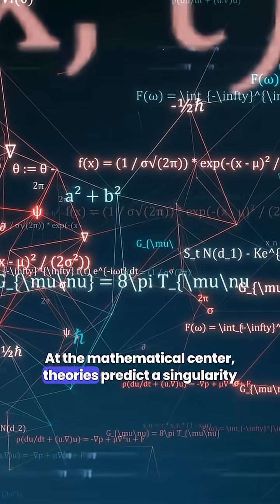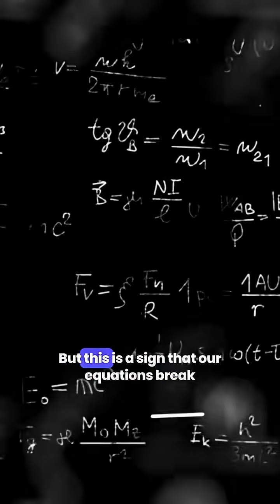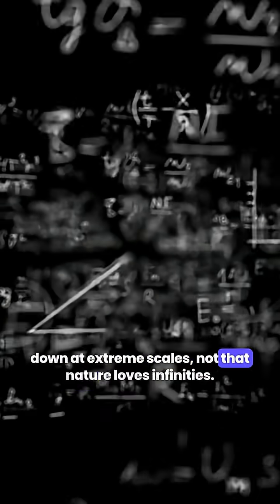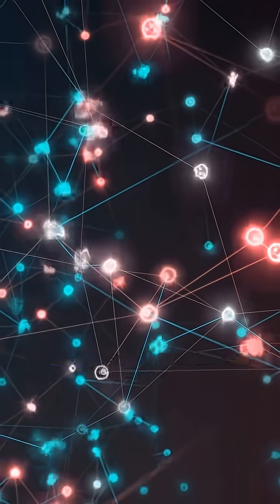At the mathematical center, theories predict a singularity—a point where densities soar to infinity. But this is a sign that our equations break down at extreme scales, not that nature loves infinities. A more complete theory blending gravity and quantum physics is expected to refine this picture.